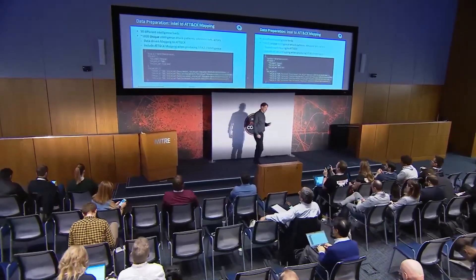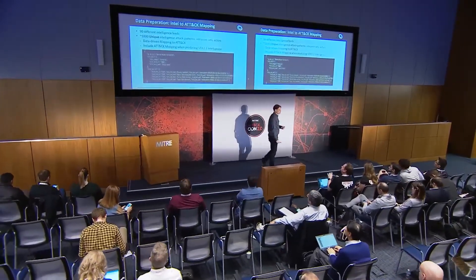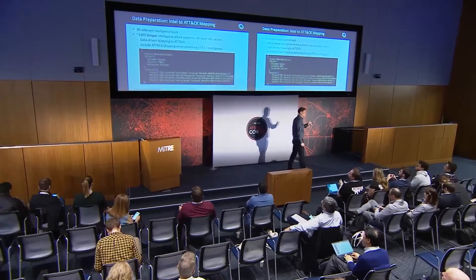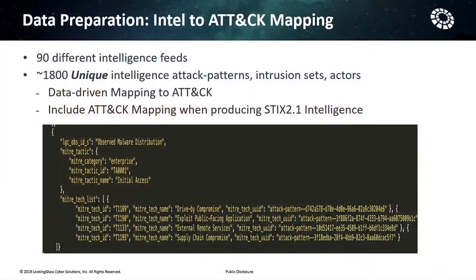We have over 90 different individual data feeds — commercial, proprietary, open source — in lots of different formats, built over many years to ingest all that data. The key thing is there were about 1,800 unique intelligence attack patterns, intrusion sets, and actors. That's not instances — those are unique individual pieces of data describing those attack patterns. The challenge we first met was how do we map that to MITRE ATT&CK?